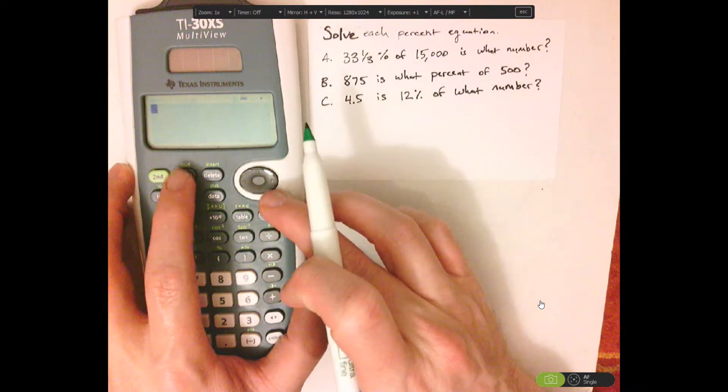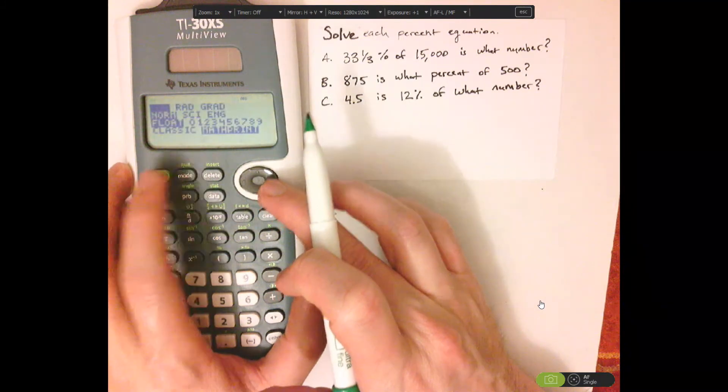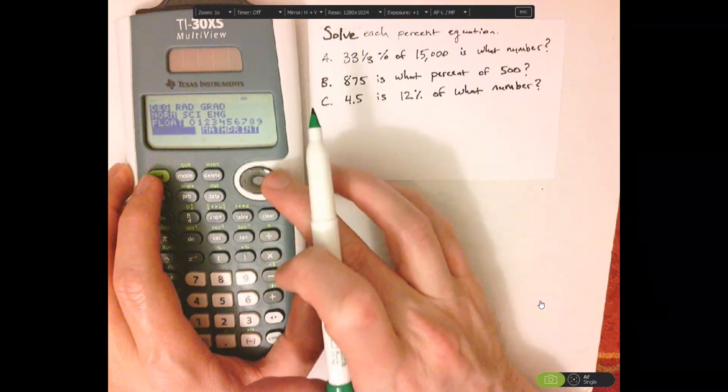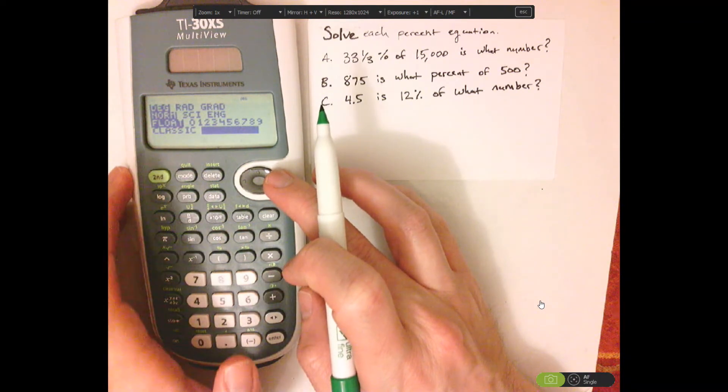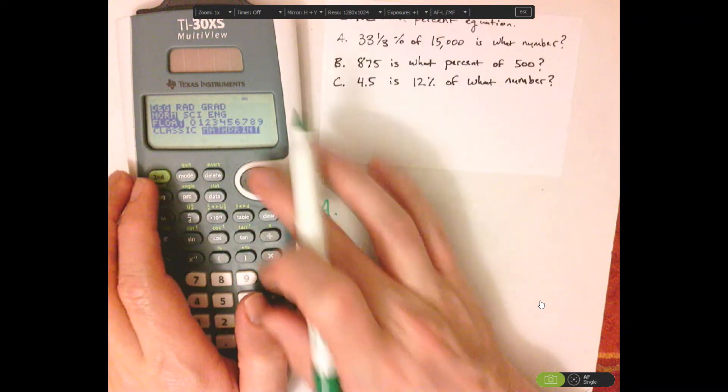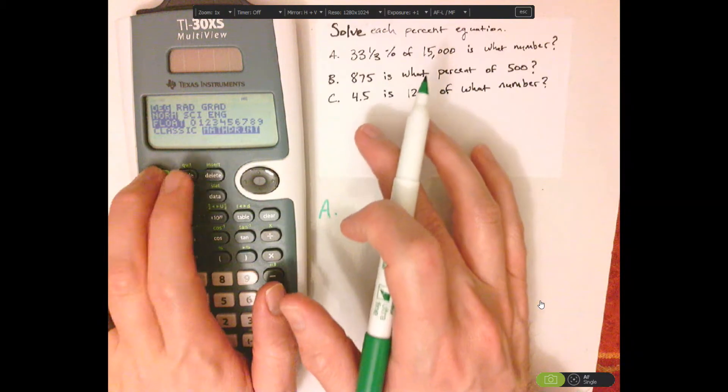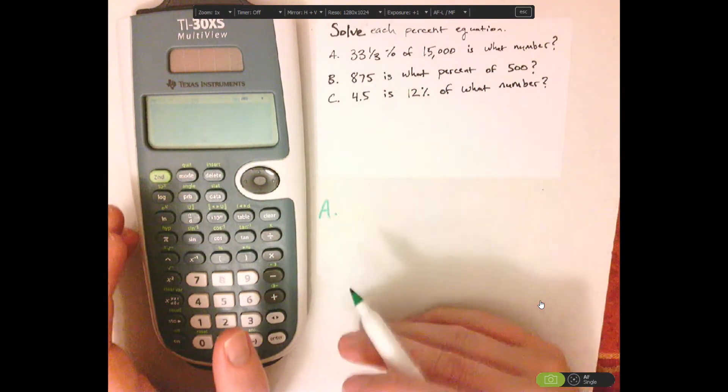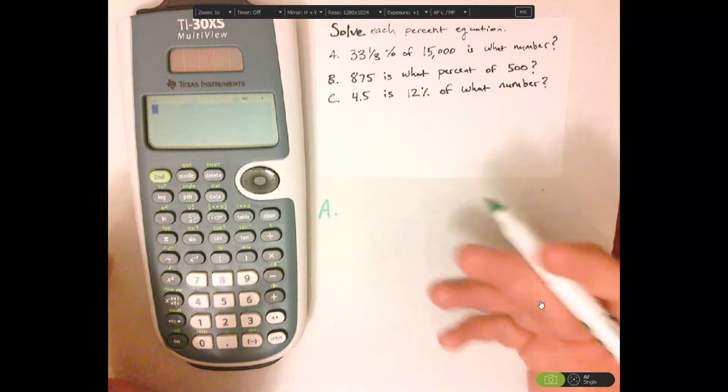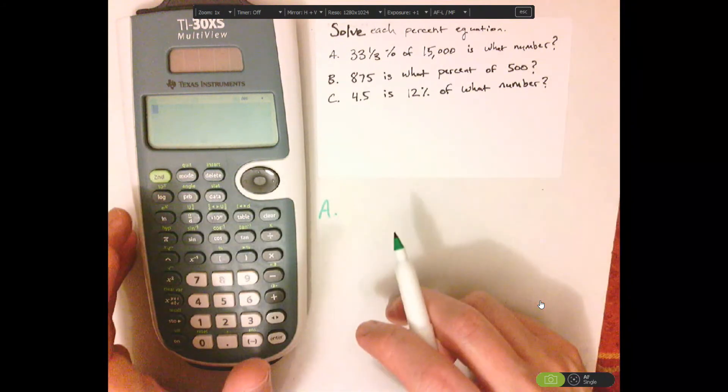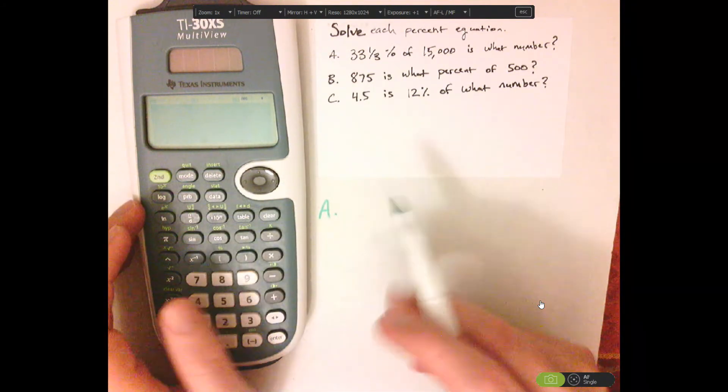Now, first I want to make sure it's in math print, so I'm going to go to mode, and then it is. If it wasn't, then you would push enter to select it. It is in math print. Math print makes mixed numbers look like mixed numbers, percentages look like percentages, so it's really nice. So make sure it's in math print.